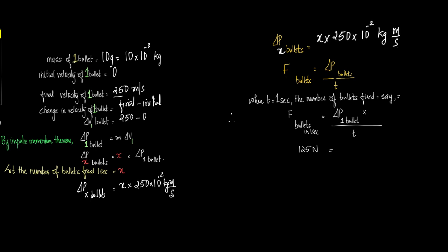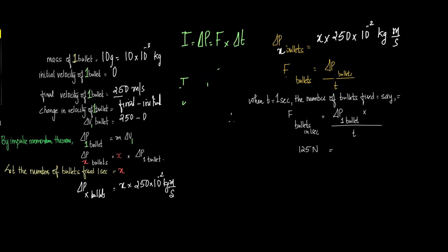Delta P of X bullets is equal to X into 250 into 10 to the power minus 2 kilogram meter per second. Now, by the impulse momentum theorem, impulse is change in momentum and is equal to F into delta T. So impulse by time is equal to F. Therefore, P by T is equal to F. And the time here is one second.